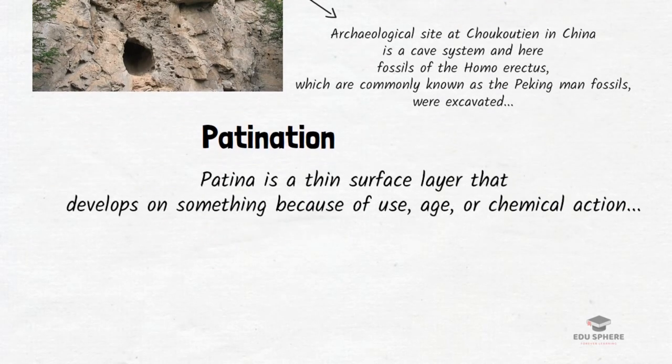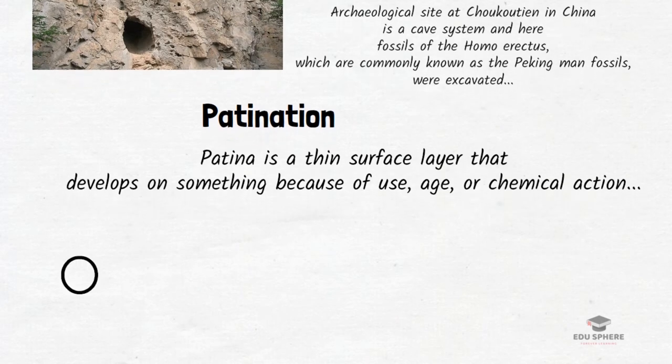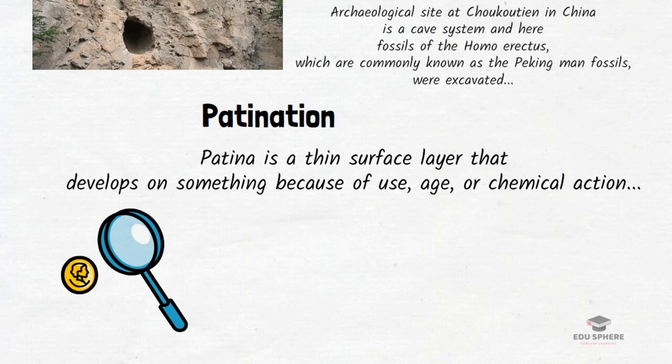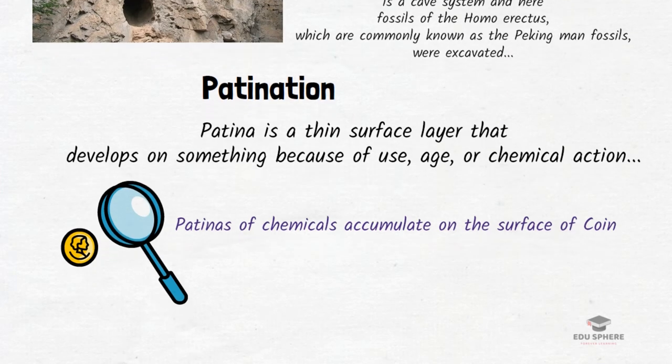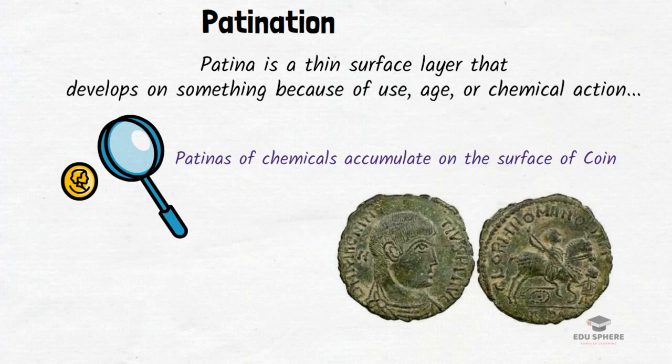Next is patination. By the dictionary meaning, patina is simply a thin surface layer which develops on something because of use, age, or chemical action. Coins and other metal artifacts dug from archaeological sites bear witnesses to their burial in the form of patinas — chemicals which accumulate on their surfaces — and different circumstances will result in different sorts of patina.